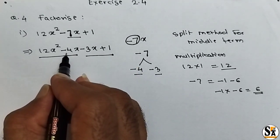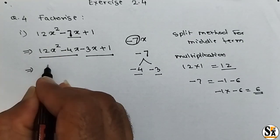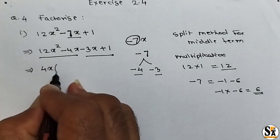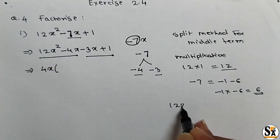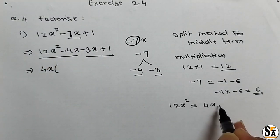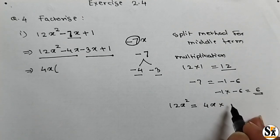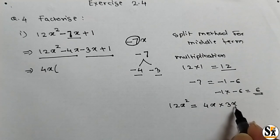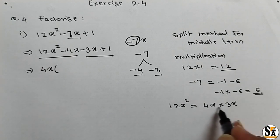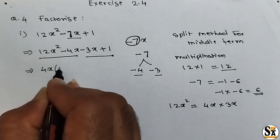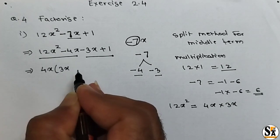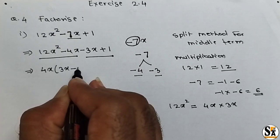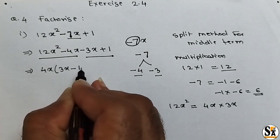From the first group, we can take 4x as common. Because 12x squared can be written as 4x into 3x. So out of these two factors, we take 4x common and put the remaining factor 3x in the bracket. Then from minus 4x, we have taken 4x common, so the remaining factor is only minus 1.